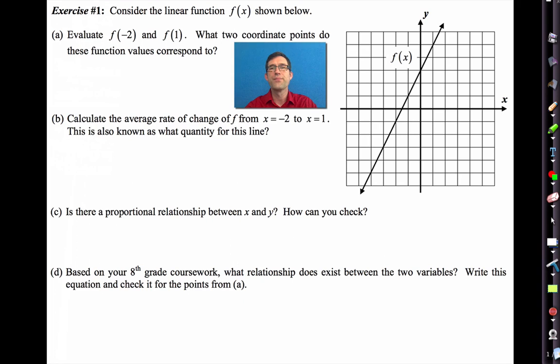I'm going to clear this out, and let's move on. In the first problem, we have a nice linear function, meaning that when we graph it, it ends up being the graph of a line. Let's start by having you do letter A. This should be pretty easy. Evaluate f(-2) and f(1). What two coordinate points do these function values correspond to? Pause the video right now and do this.